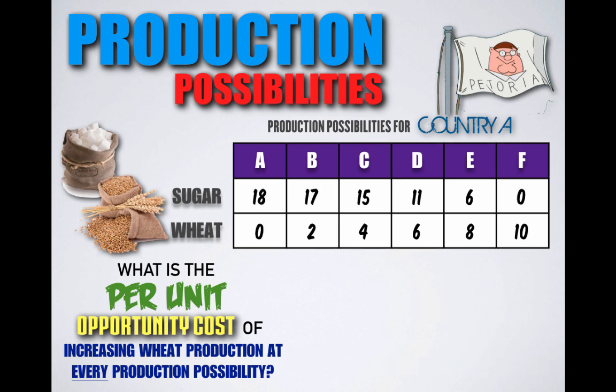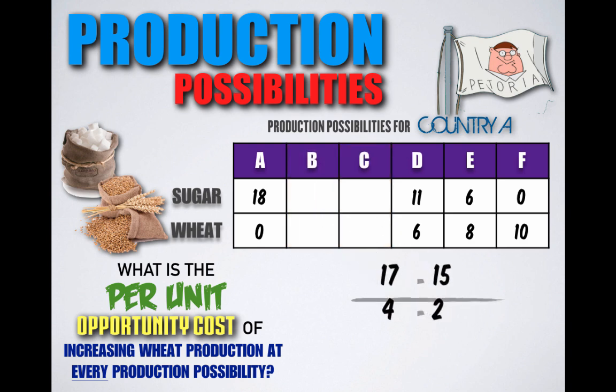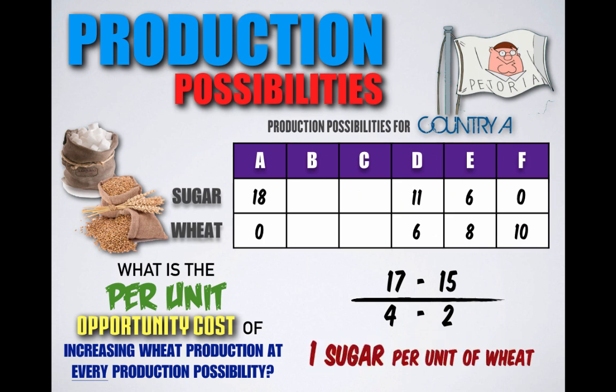Let's do another one. If Petoria shifted production from combination B to combination C, it would decrease sugar production from 17 units to 15 units but increase wheat production from two units to four units. Petoria would lose two units of sugar but gain two units of wheat, meaning for every unit of wheat gained, Petoria would lose the potential to produce one unit of sugar.